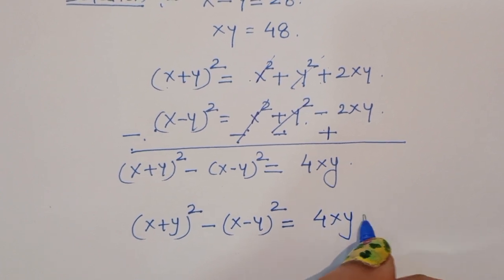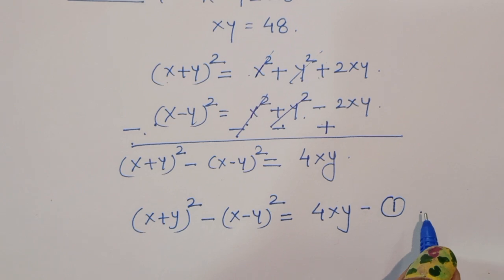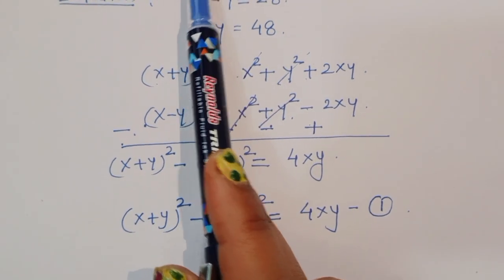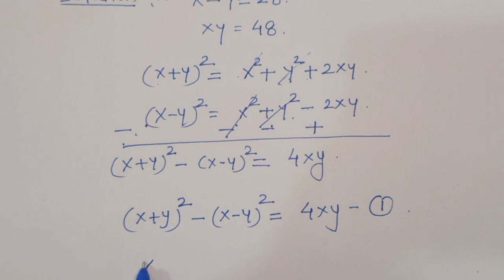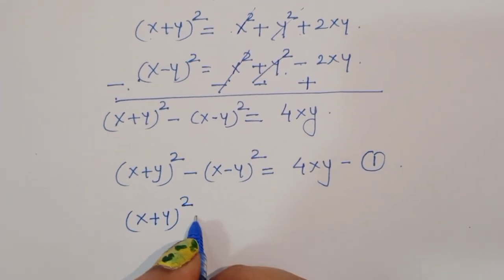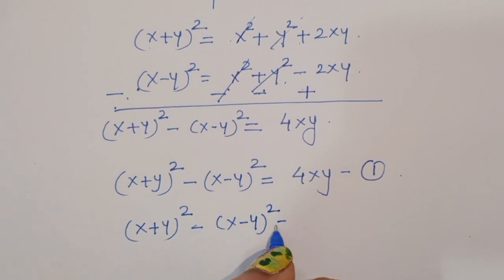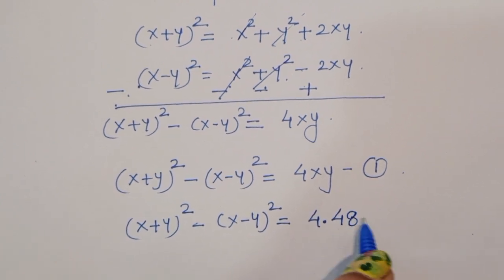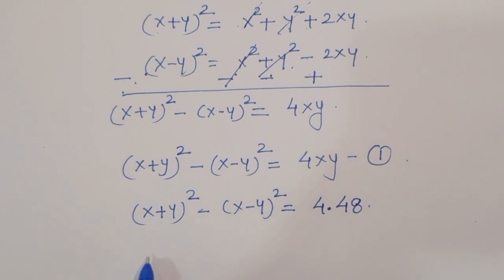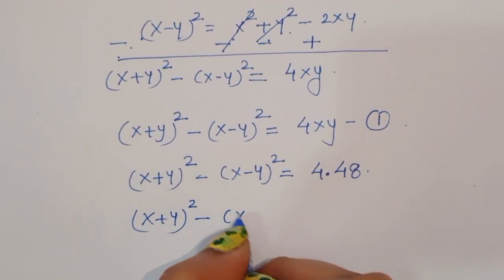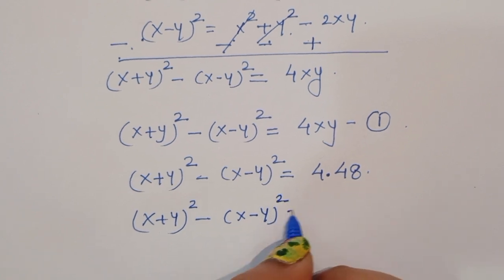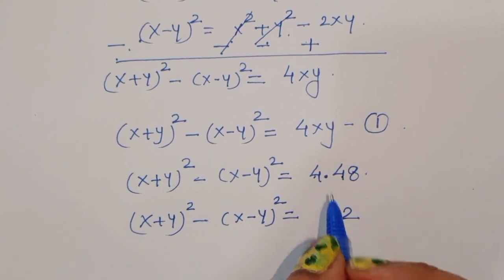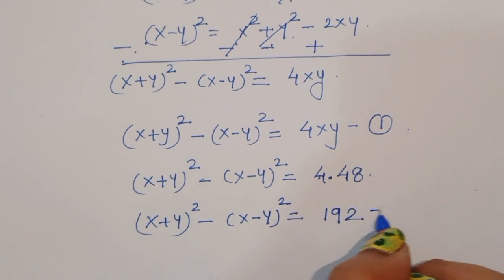So we have a new formula: x plus y whole square minus x minus y whole square is equal to 4xy. This is equation 1. Now the value of xy we already know is 48, so we can write: x plus y whole square minus x minus y whole square is equal to 4 times 48, which is 192. This is equation 2.